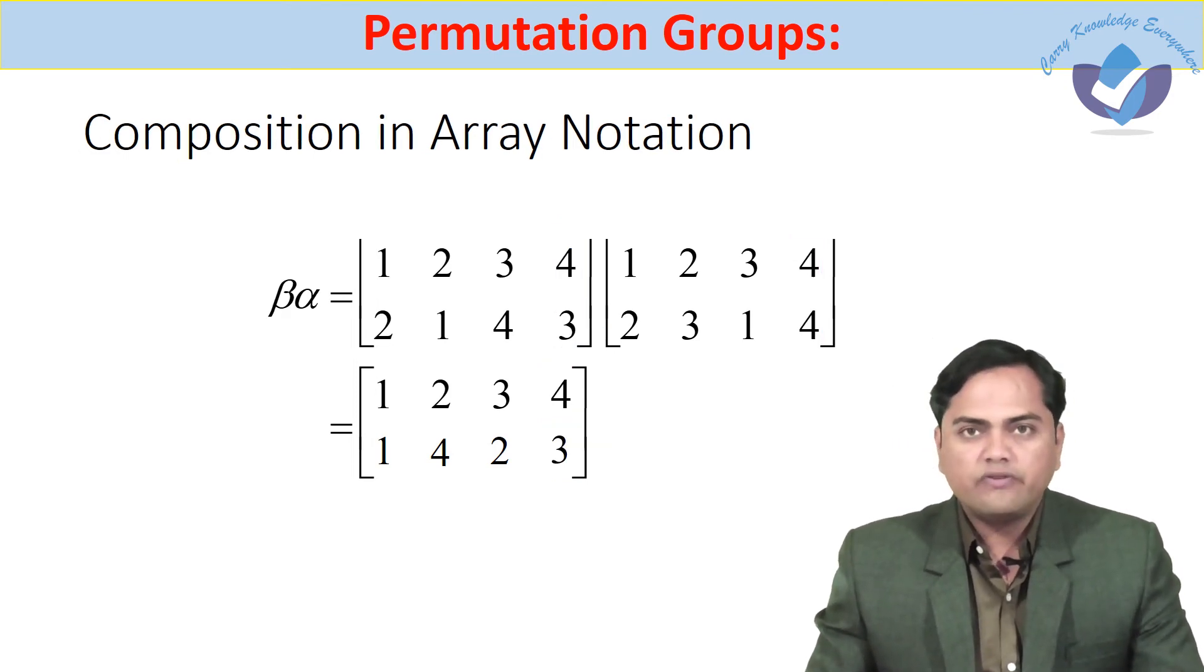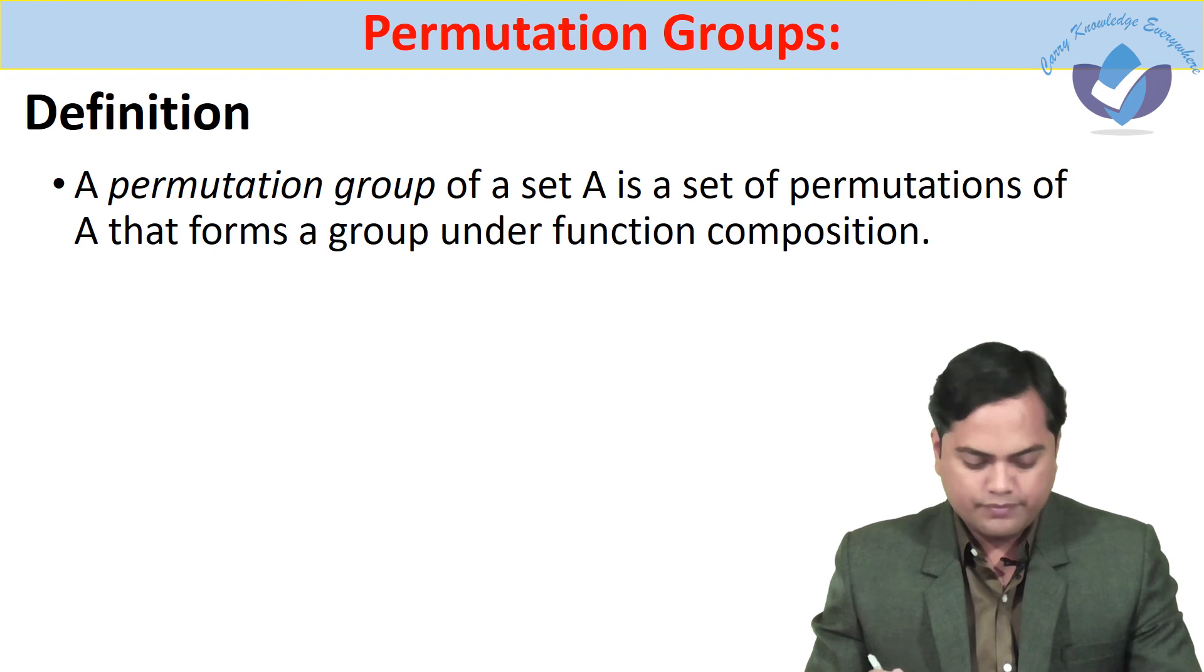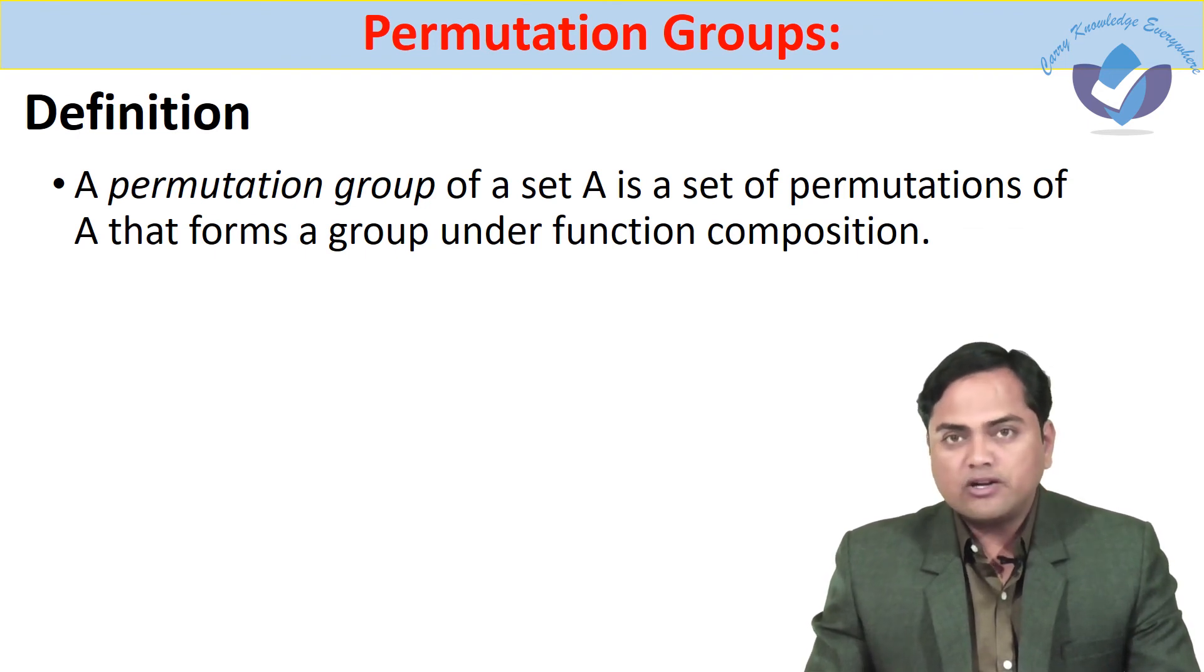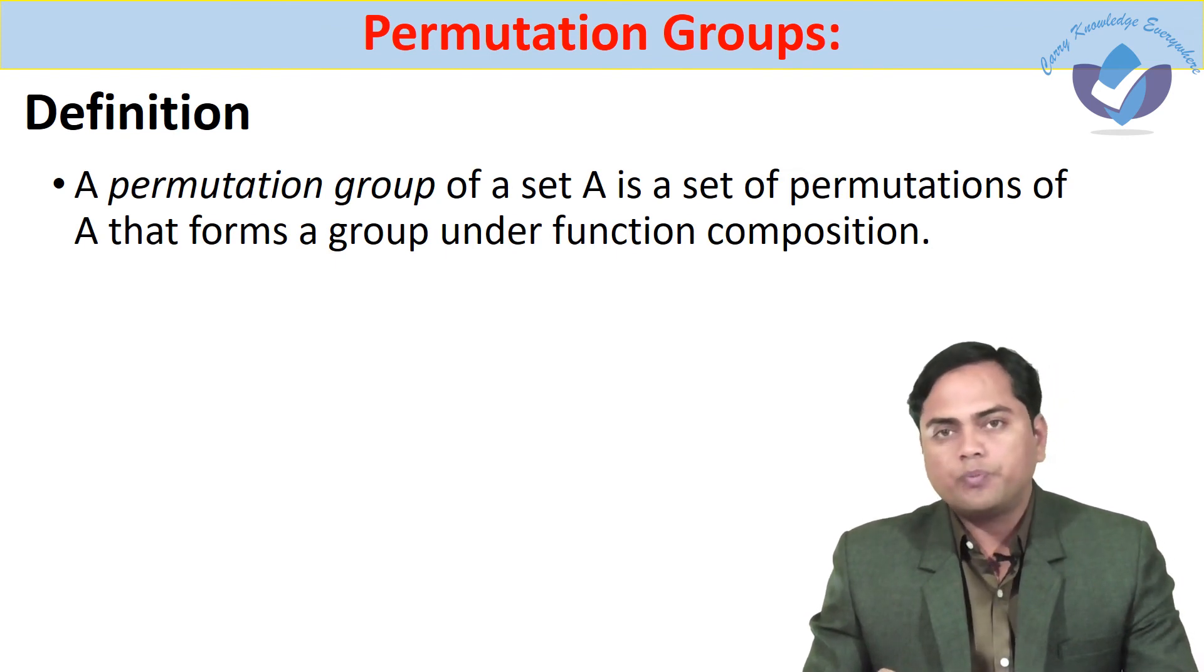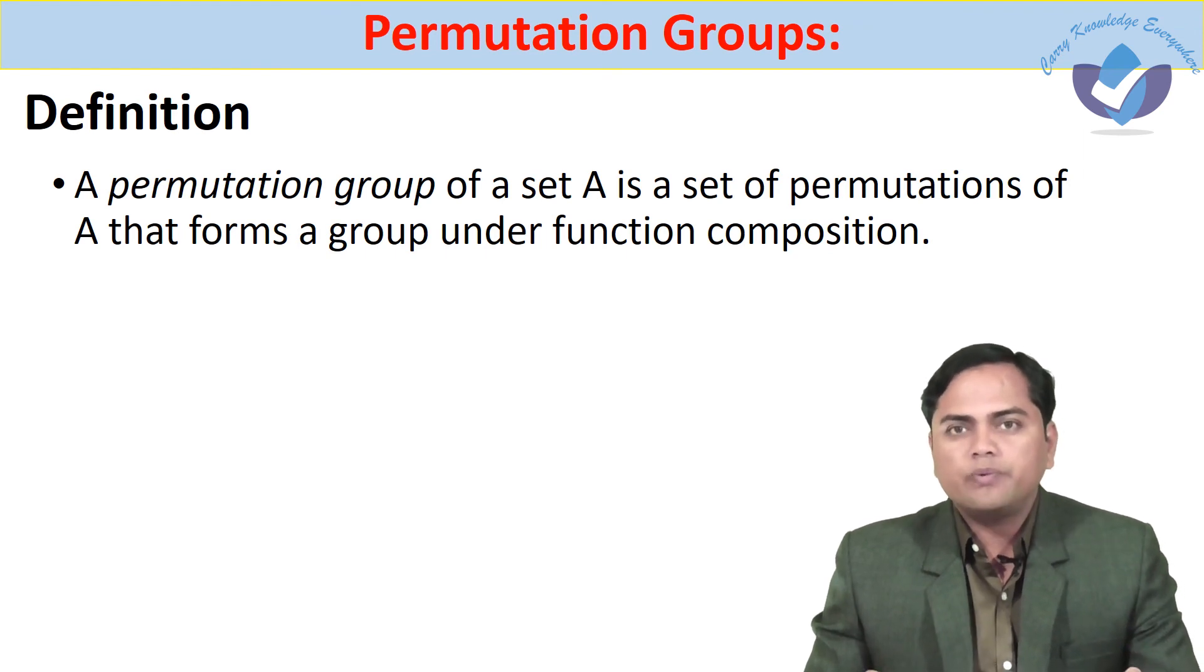In this way we can define composition of two permutations alpha and beta. What do we mean by a permutation group? A permutation group of a set A is the set of permutations of A that forms a group under composition of functions. Such a group is known as a permutation group.